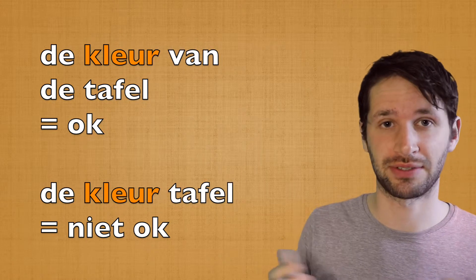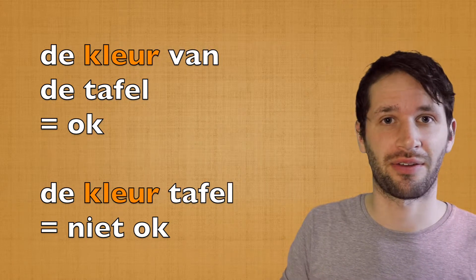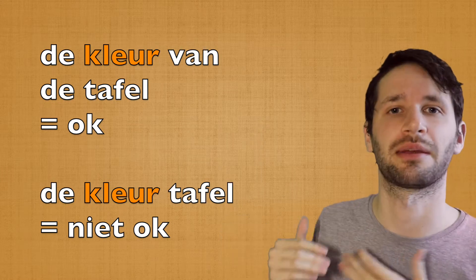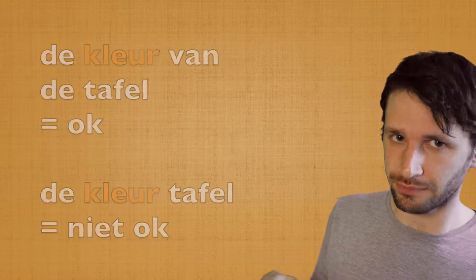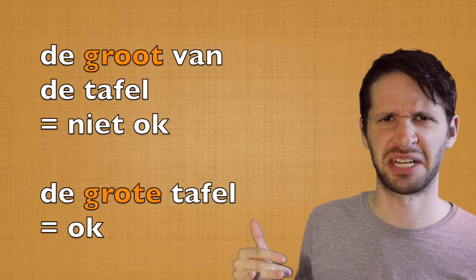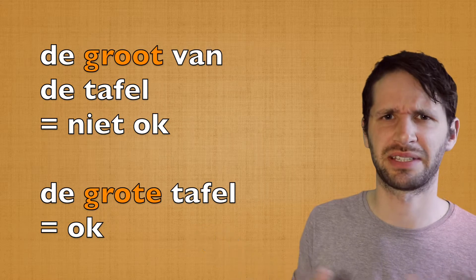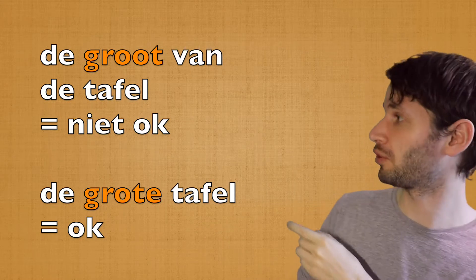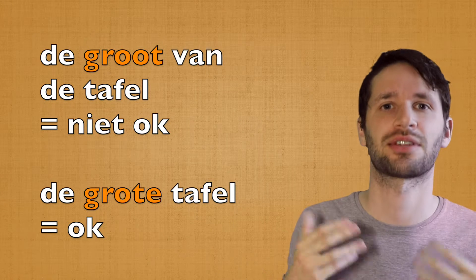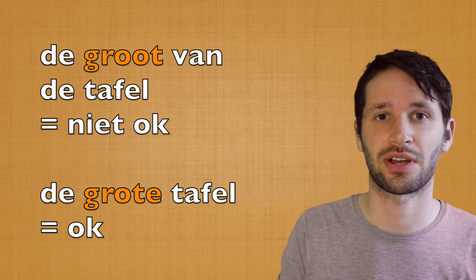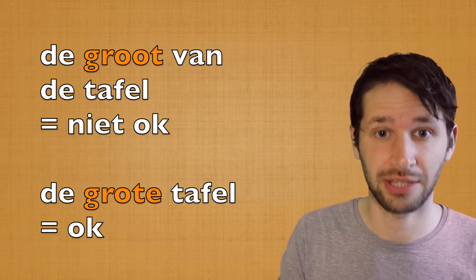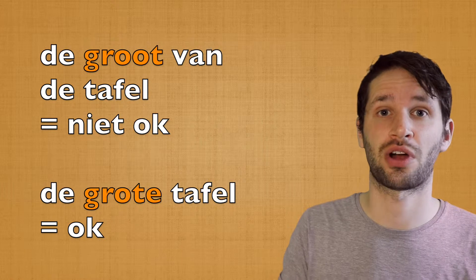You can make the same test with an adjective. For example, groot, meaning big. De groot van de tafel — the big of the table — well, that doesn't really sound right. But de grote tafel — the big table — that sounds right. So that's how you know where to use helft and where to use halve.